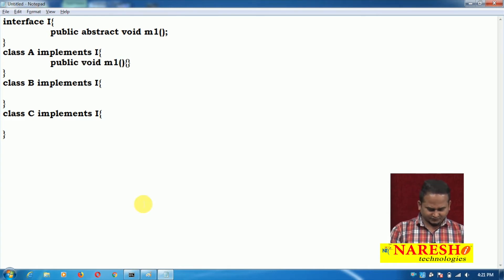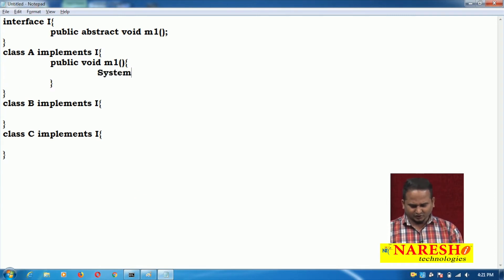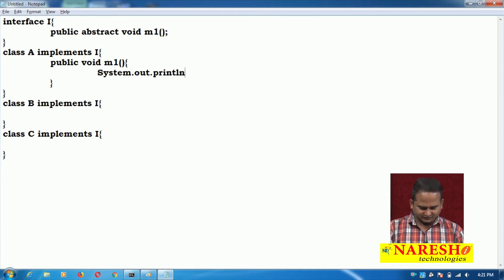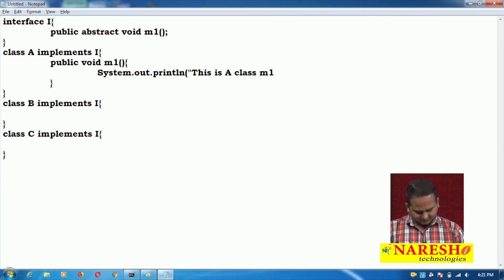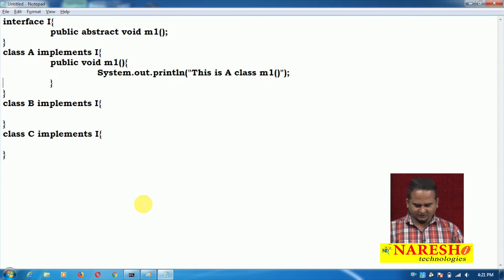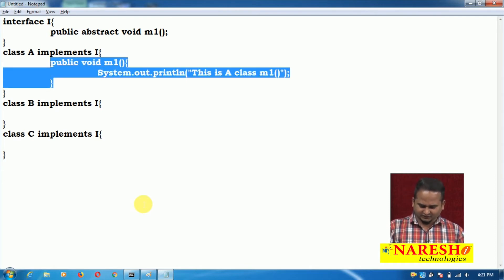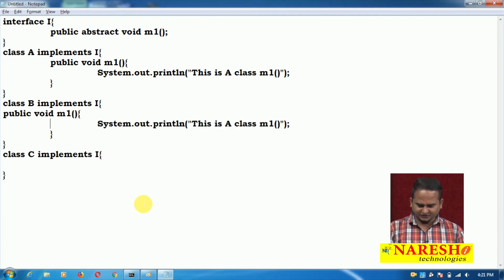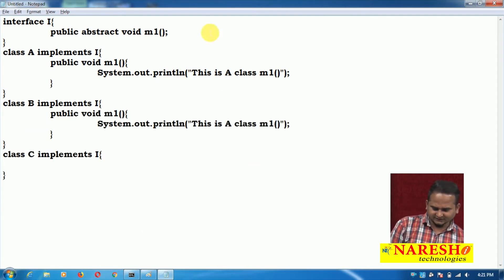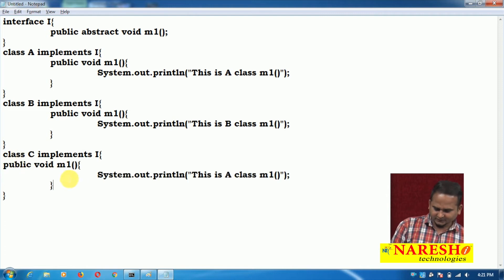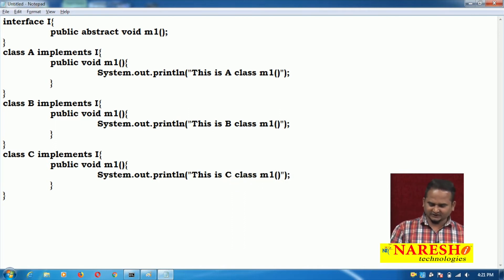Each class provides a public void m1 method. In class A's m1 method, I am writing System.out.println — 'This is A class m1 method'. I copy this method and paste it into class B, changing the message to 'This is B class m1 method', and similarly for class C — 'This is C class m1 method'.